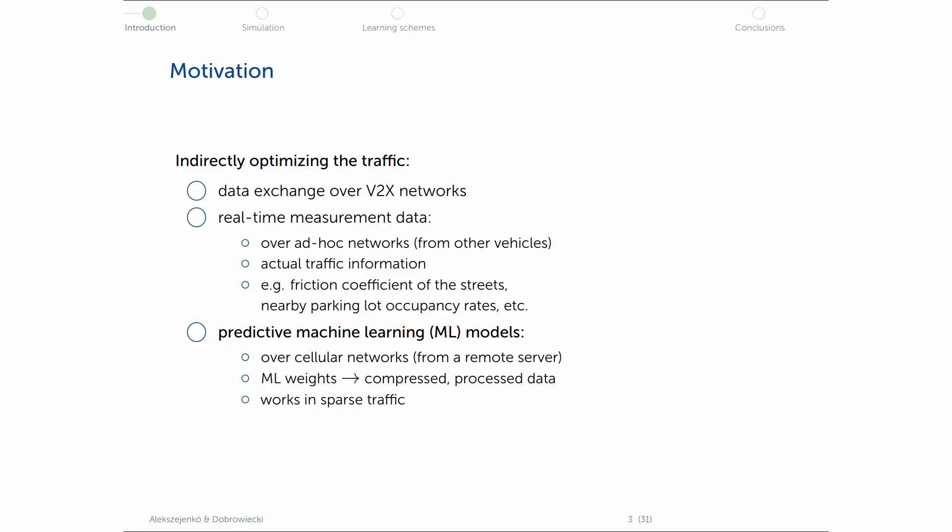It's a very good way to compress all the knowledge about the network because machine learning weights are really small in size. Therefore, it's a very good compression of all these sensor data. And it even works when the traffic is sparse. So you don't really have to have thousands of cars in a smaller area because machine learning models contain all this knowledge.